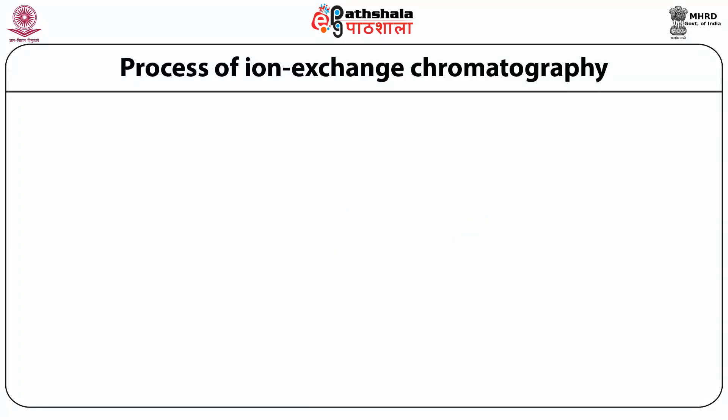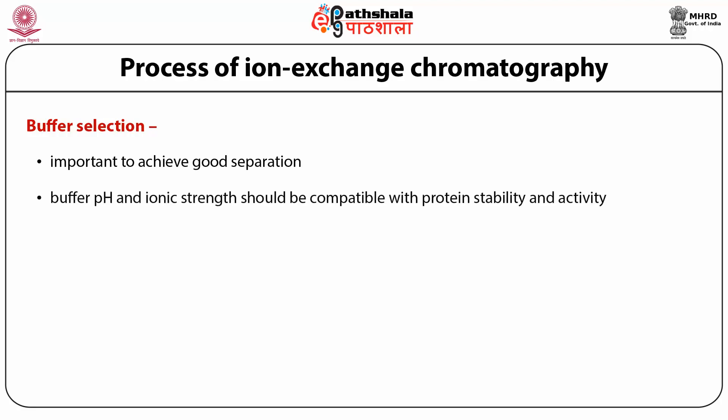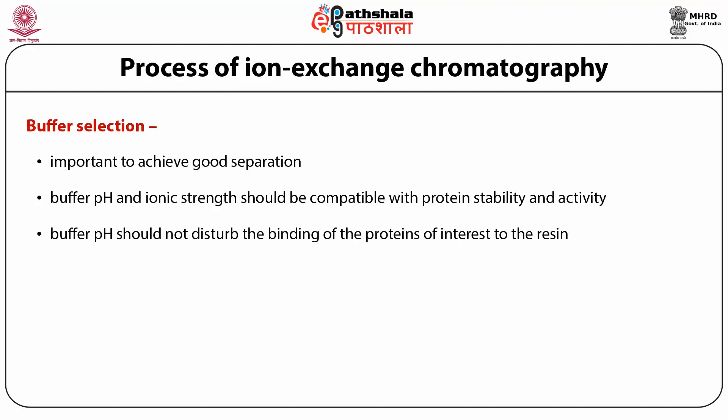The process of ion exchange chromatography can be divided into three parts: buffer selection, sample preparation and loading, and flow rate and elution. Buffer selection is important to achieve good separation. The buffer's ionic strength and pH should match the protein's activity and stability. The pH should not prevent binding of the protein of interest to the resin, nor be so extreme as to require very high ionic strength for elution, which could cause protein precipitation.